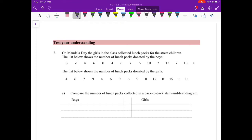This test your understanding problem is about sandwiches collected for Mandela Day for street children. We need to look for the lowest and highest values, and remember this is a back-to-back stem-and-leaf plot where we're comparing similar sets of data.